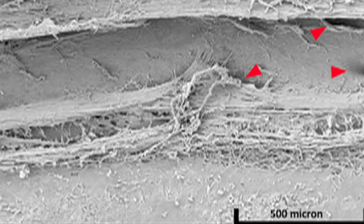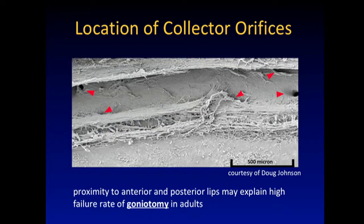There are even areas of duplication. That is the reason why, if you've ever tried canaloplasty, you sometimes cannot get the catheter around. But if you have a device that ablates only the inner wall, then you can tap into all these segments without getting stuck.